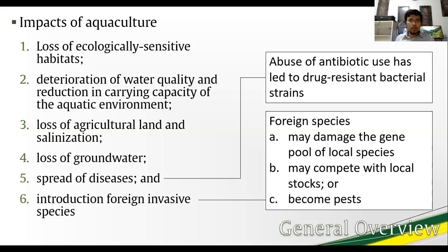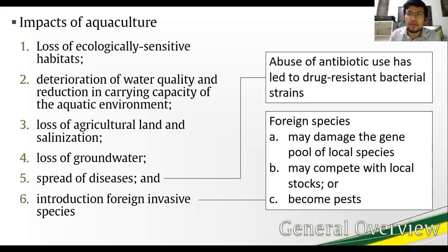Another concern is that an introduced species may compete with local stocks, such as the introduction of catfish and silver carp. Lastly, species can become pests, such as in the case of the golden kuhol with rice — although the golden kuhol is not an aquaculture species, it serves as a useful example to highlight this impact.